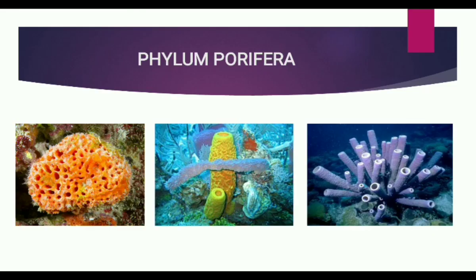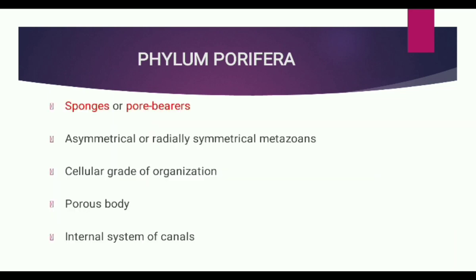Next, we discuss Phylum Porifera — the first phylum in Kingdom Animalia under Non-Chordates. Animals of this phylum are commonly known as sponges or pore bearers. They are asymmetrical or radially symmetrical metazoans. Asymmetry means the body cannot be cut into equal halves. The sponge body when cut is asymmetrical.